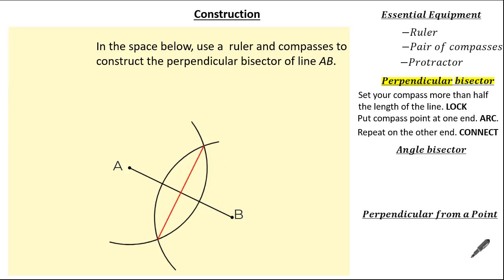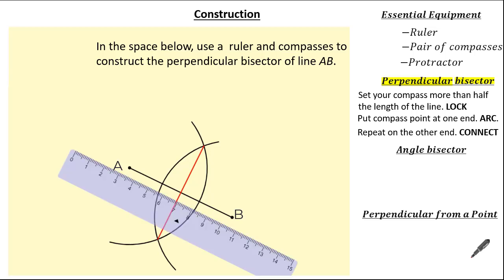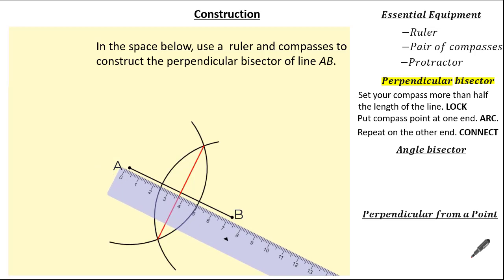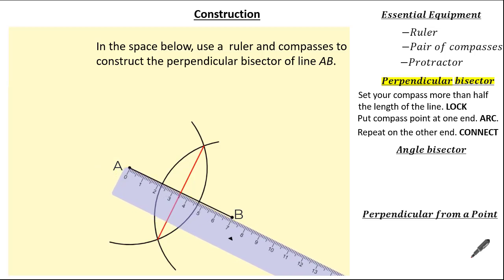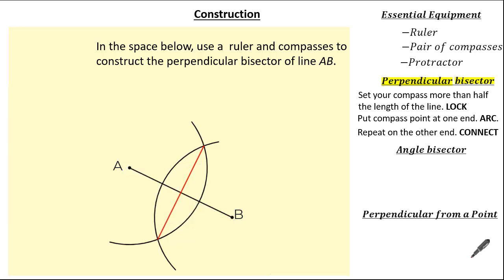Just like before, let's check to see if we've done a bisection by using our ruler. Using our ruler, you can see the line is around about seven centimetres, so this means we've done a very good perpendicular bisection. Just remember, the examiner does give us a little bit of leeway, so we're allowed to be a few millimetres out — don't worry too much about being absolutely perfect.